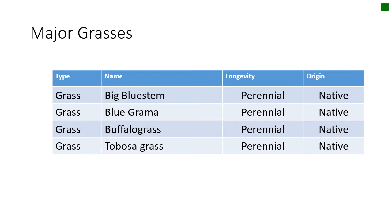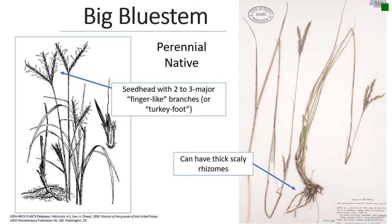Let's start with big bluestem. It was one of those signature tall grasses of the tall grass prairie. The main feature for recognizing it is these two to three branches — they form these finger-like branches. One of the common names of this plant is called turkey foot because those three branches form an inflorescence that looks kind of like a turkey foot.